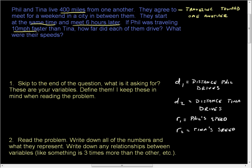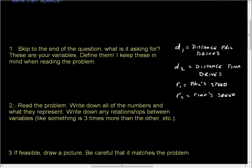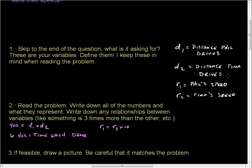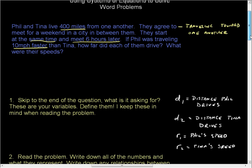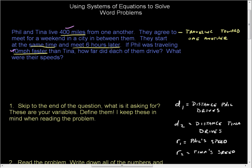Phil is traveling 10 miles an hour faster. Write down all of the numbers and what they represent. 400 represents the total distance that both of them drive, because they meet somewhere in between, so that's D1 plus D2. Six hours is the time each drove. And Phil is traveling 10 miles an hour faster than Tina. We've got the 400 total distance and we've got the six hours later.